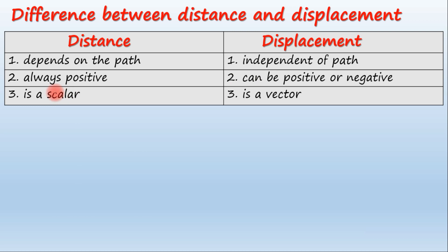Distance is a scalar. This is the displacement vector. The difference between distance and displacement is summarized in the table.